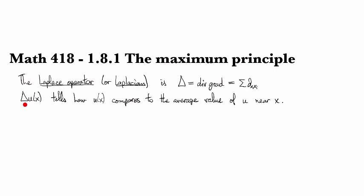The meaning of this divergence of gradient takes a bit to wrap your mind around, but the Laplacian tells you how much the value of u at a point x compares to the average value of u near that point x.